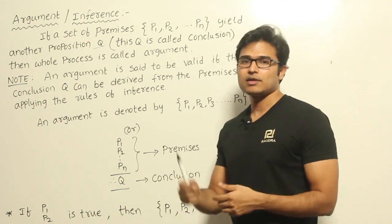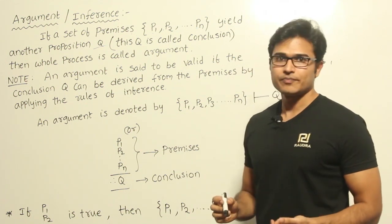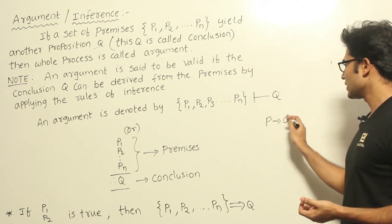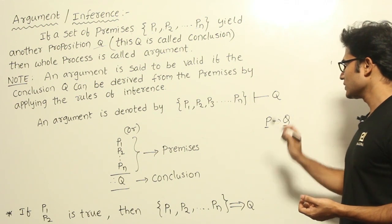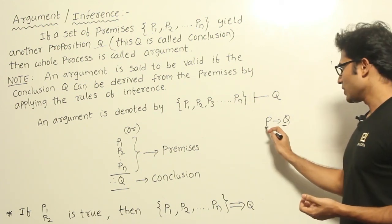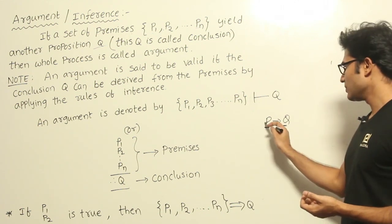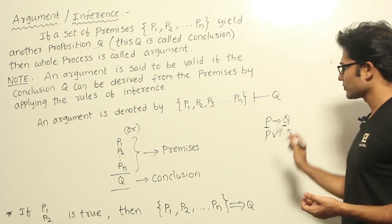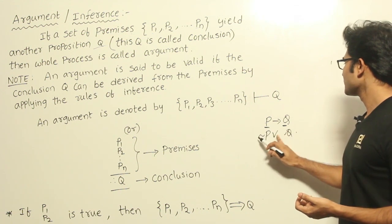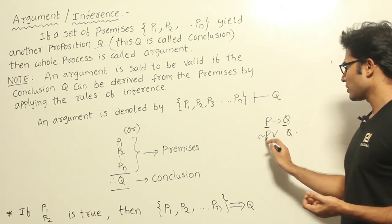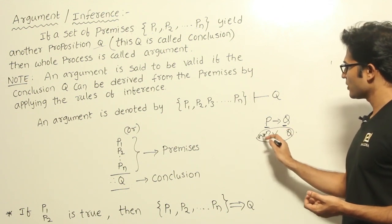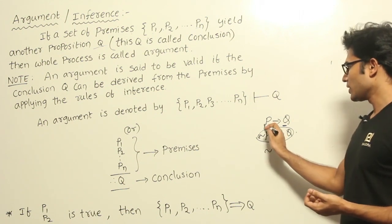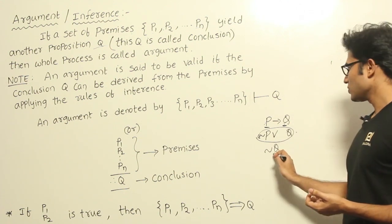For an example, let's say P implies Q — P is 'if today is Sunday' and Q is 'today is a holiday.' You can also write it as negation P or Q. Now let's say there is one more premise: 'today is not a holiday.'